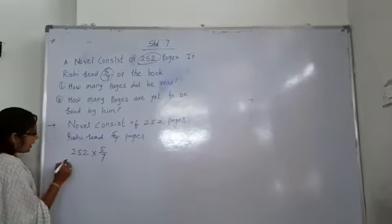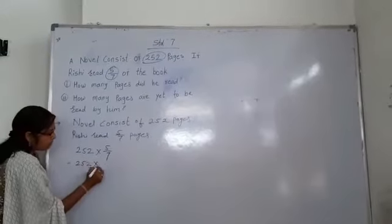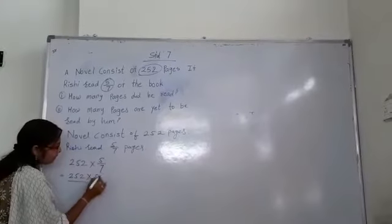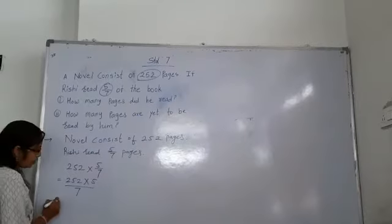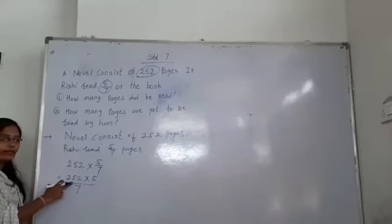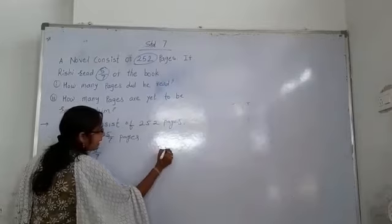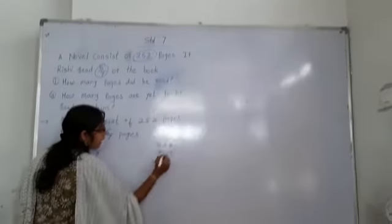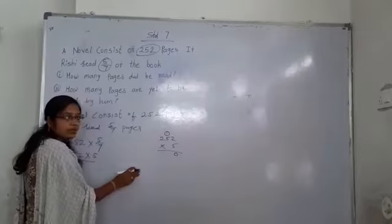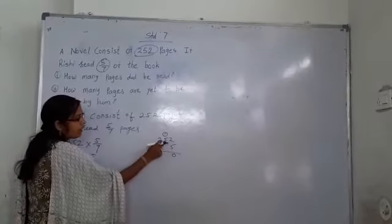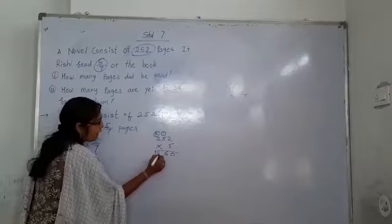252 into 5 by 7. Numerator multiply, coming at the denominator. First we solve 252 into 5. Do multiplication: 5 times 2 is 10, write 0, carry 1. 5 times 5 is 25, plus 1 is 26, write 6, carry 2. 5 times 2 is 10, plus 2 is 12.